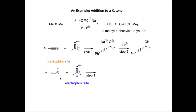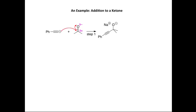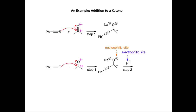The nucleophilic site is the negatively charged alkynide anion, and the electrophilic site is the delta plus carbon in the carbonyl. The first curly arrow shows electron density moving from the negatively charged carbon toward the electropositive carbonyl carbon. A second curly arrow shows electron density moving onto the electronegative oxygen atom, forming a new carbon-carbon bond and generating a negatively charged alkoxide ion. That completes step one.